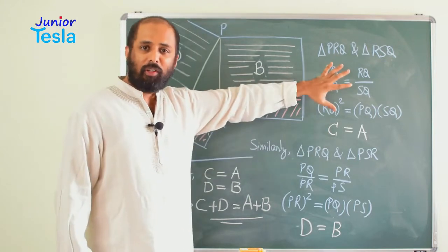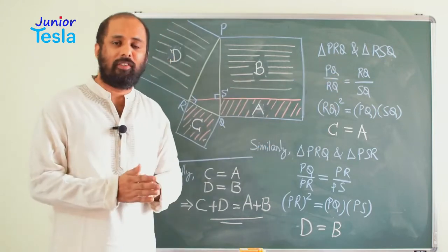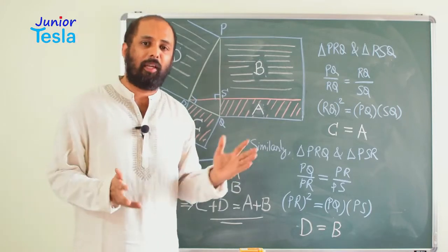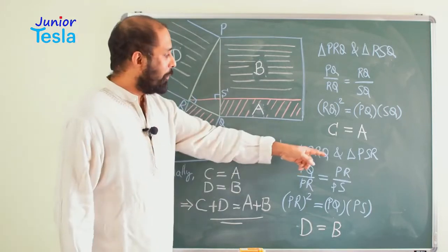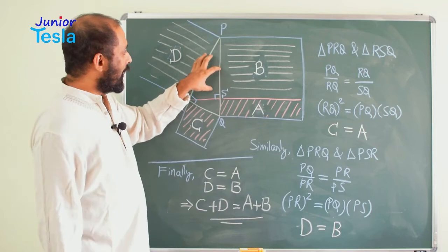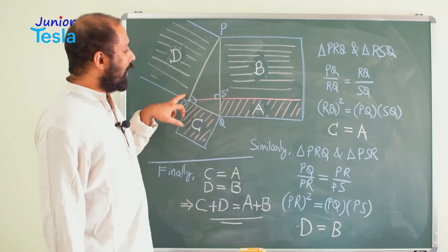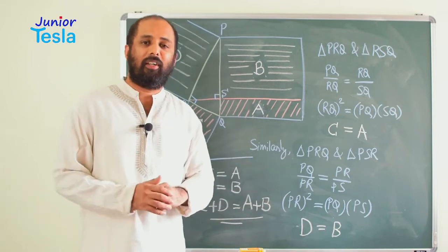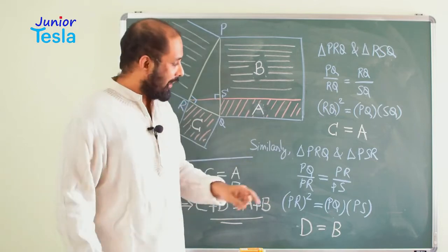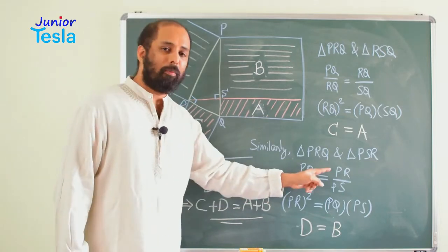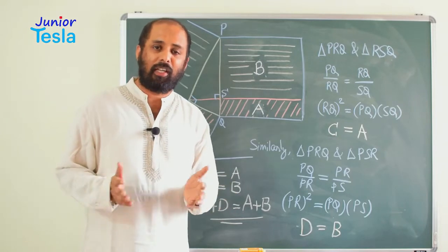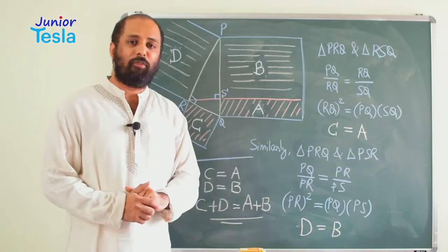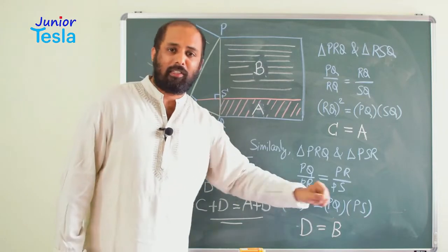Now one part is over. We have taken another set of similar triangles — that is PRQ and PSR. PRQ is the original triangle and PSR is the small triangle. From these two similar triangles, I can write another set of ratios: PQ by PR and PR by PS. These two ratios are equal. By cross multiplying, I can say PR square is equal to PQ into PS.